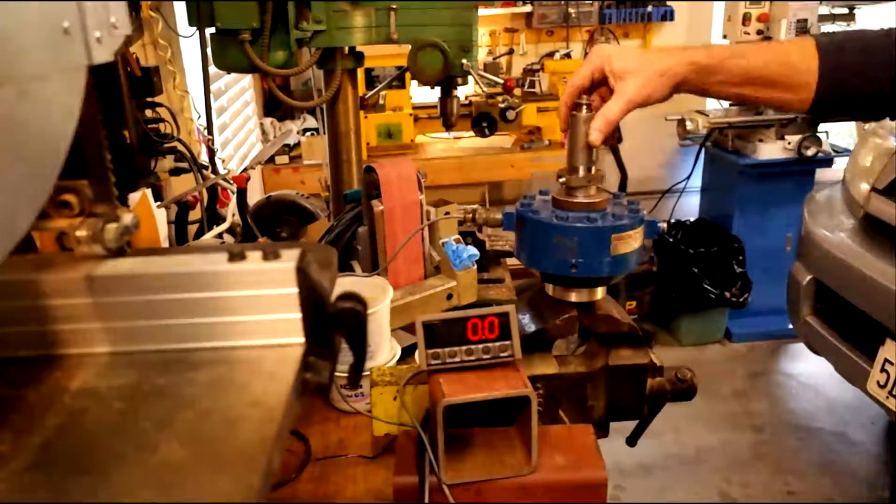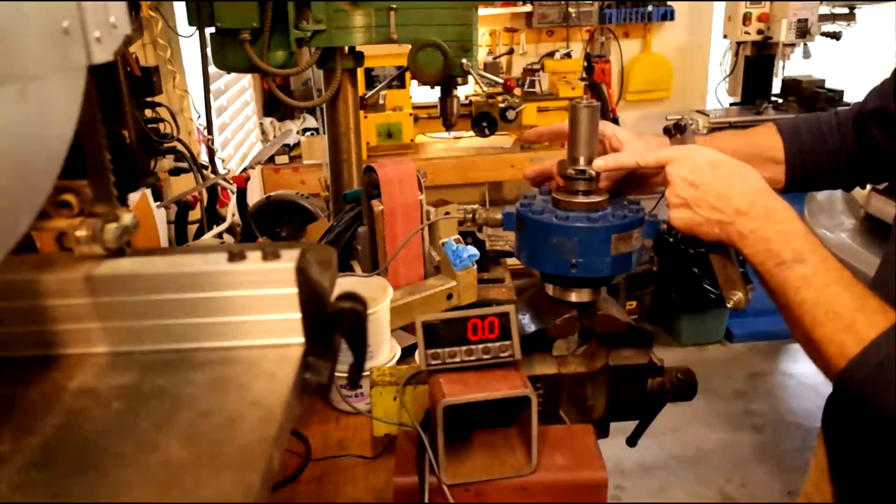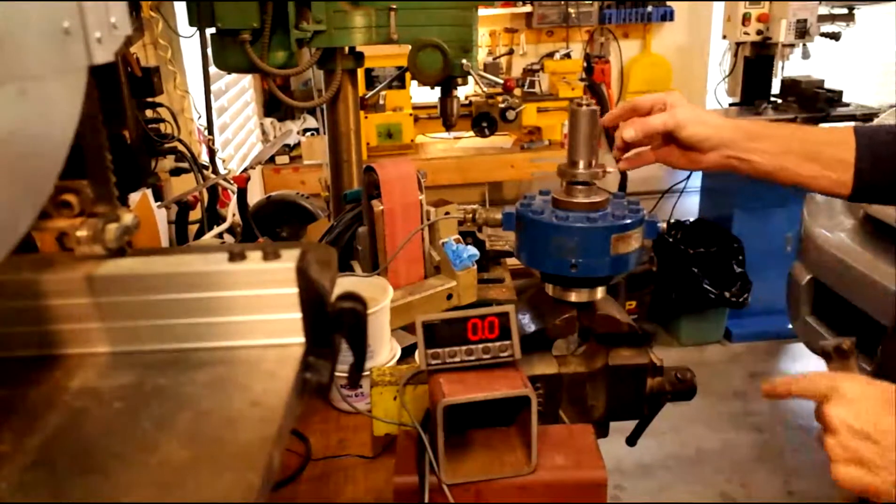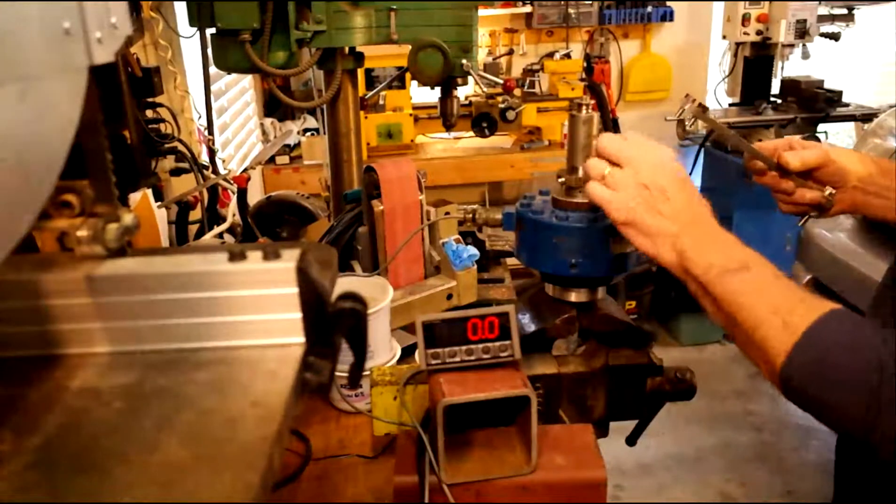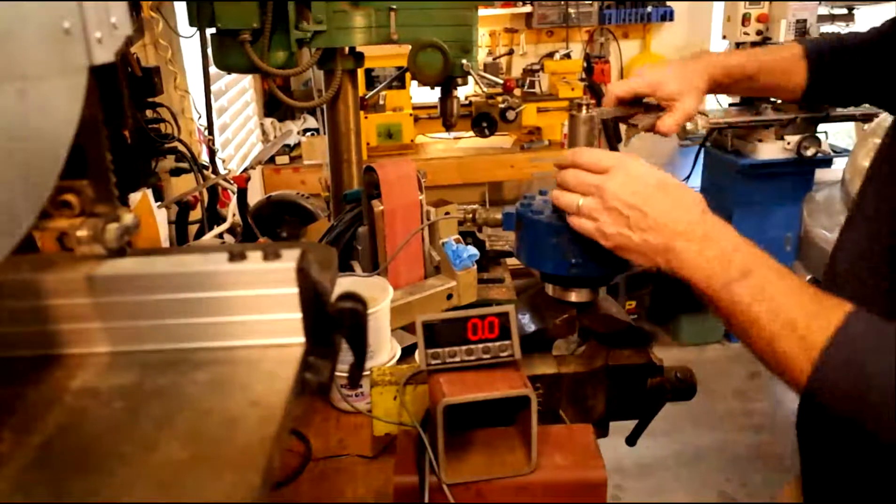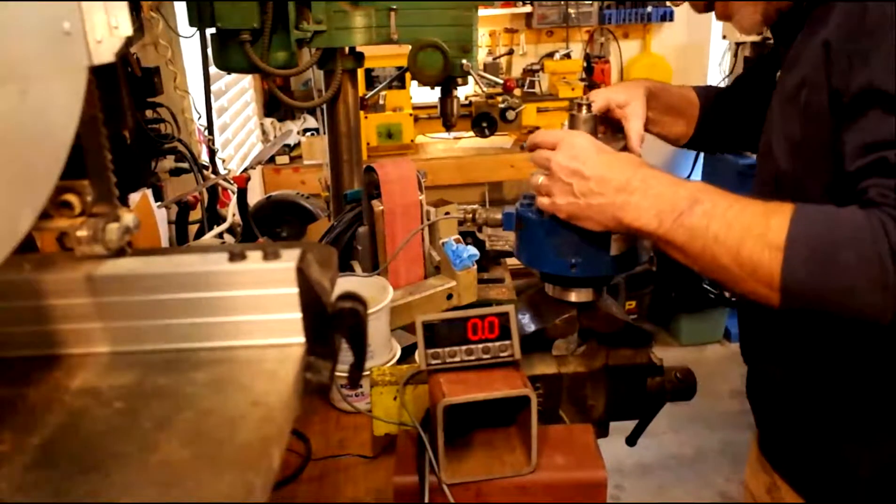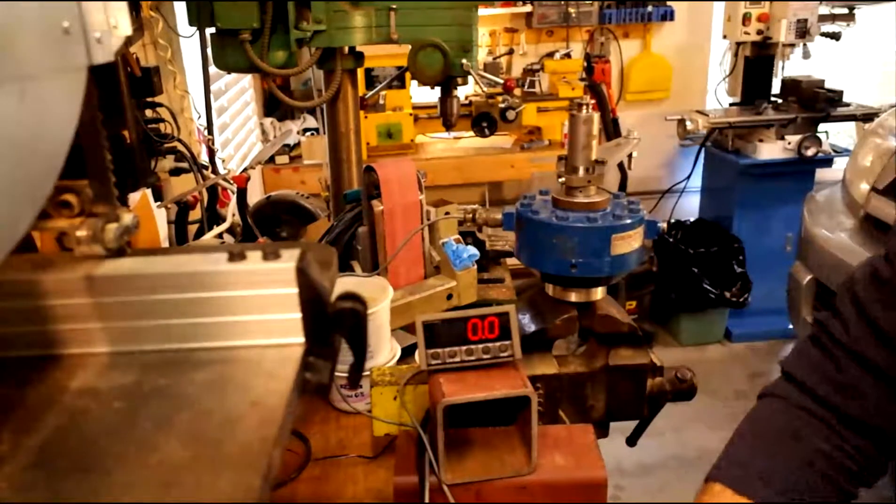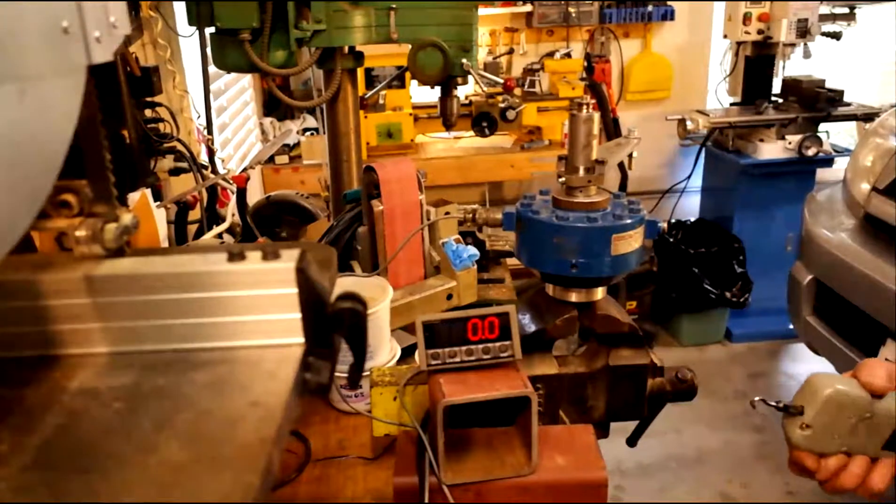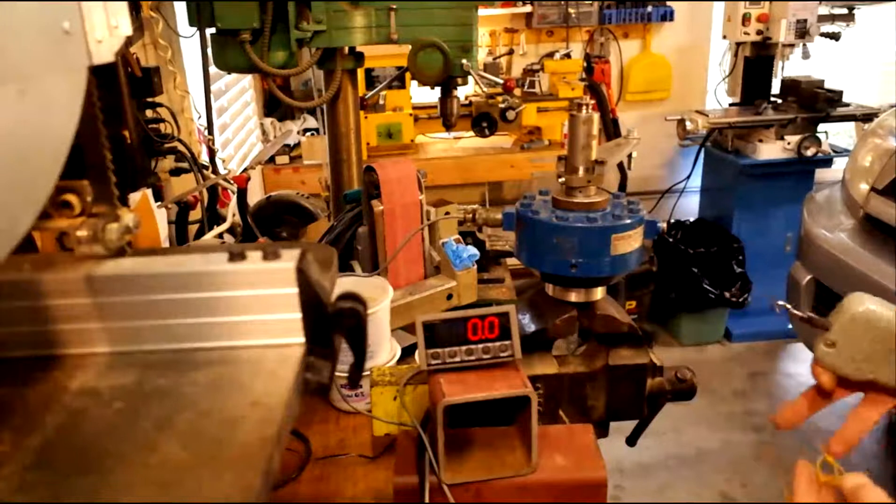Okay, so I have the ball nut mounted here. Underneath is the thrust bearing. And I built a little spanner wrench here that goes between the holes in the ball nut. Like so.